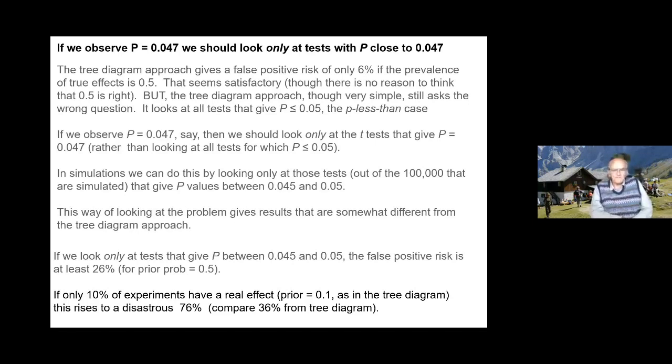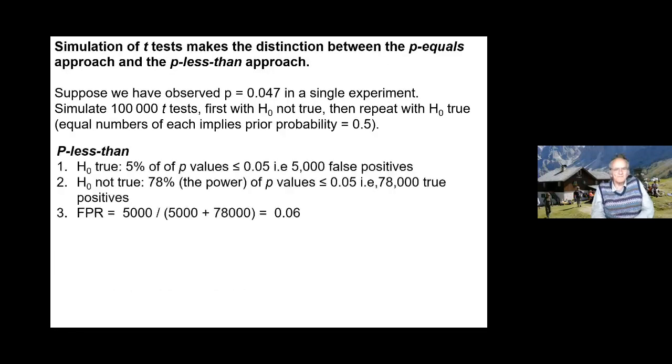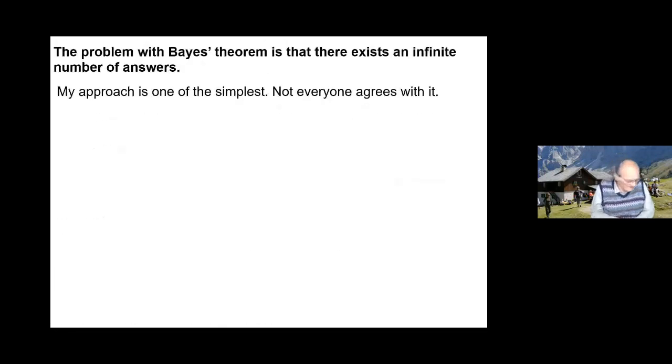If only 10% of the experiments had a real effect, a prior of 0.1, in the tree diagram this rises to a disastrous 76% of false positives. That really is pretty disastrous. Now of course the problem is you don't know this prior probability. I'm going to skip this slide for speed; it just goes through the actual numbers that I got in the 2014 simulation paper.